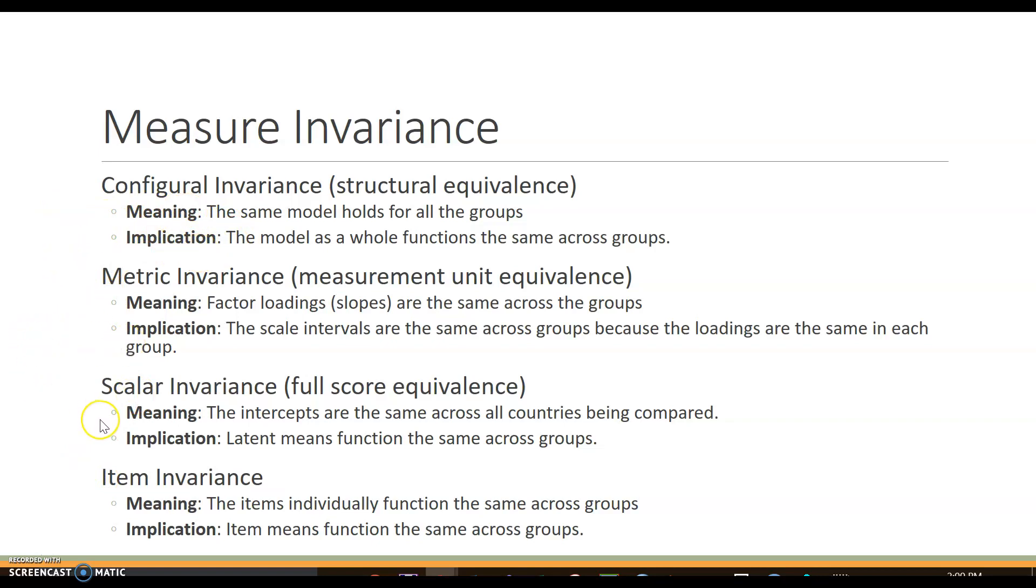We can go further and lock for scalar invariance. So we're locking intercepts in this case. So these first three are kind of the way that classical test theory measures invariance.